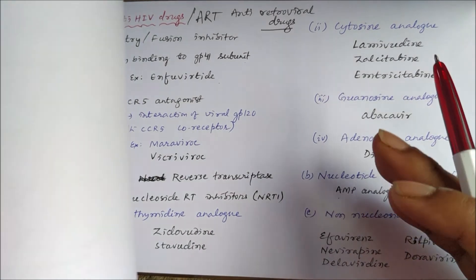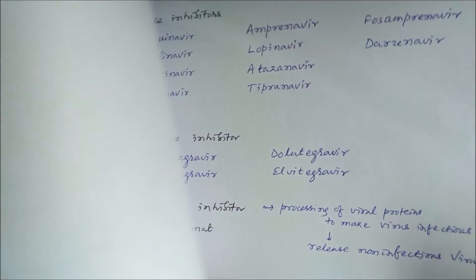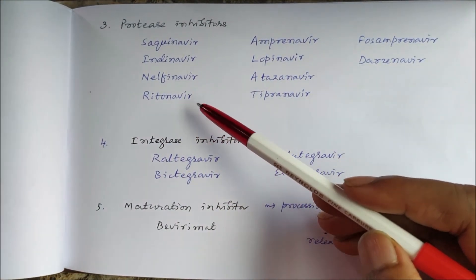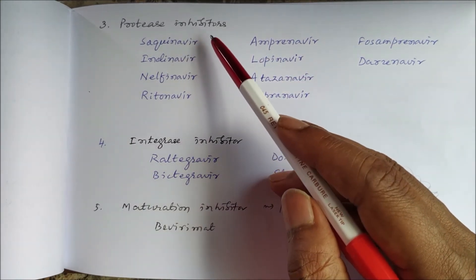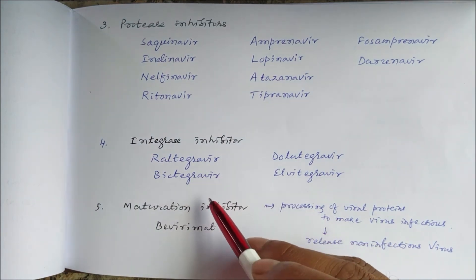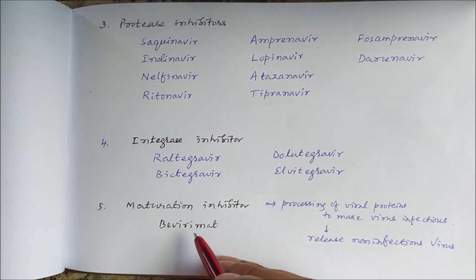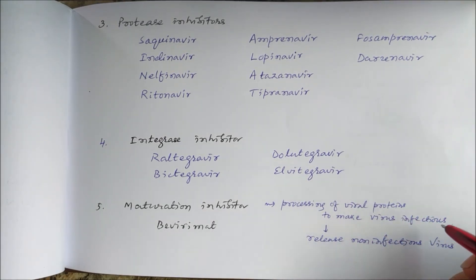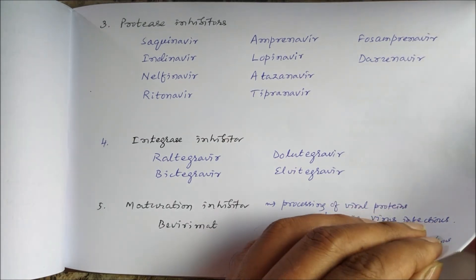Protease inhibitors include saquinavir, indinavir, nelfinavir, ritonavir, amprenavir, fosamprenavir, lopinavir, darunavir, atazanavir, and tipranavir. Integrase inhibitors include raltegravir, bictegravir, dolutegravir, and elvitegravir. A newer drug, bevirimat, is a maturation inhibitor that inhibits the final processing of viral proteins needed to make the virus infectious, resulting in release of non-infectious virus.